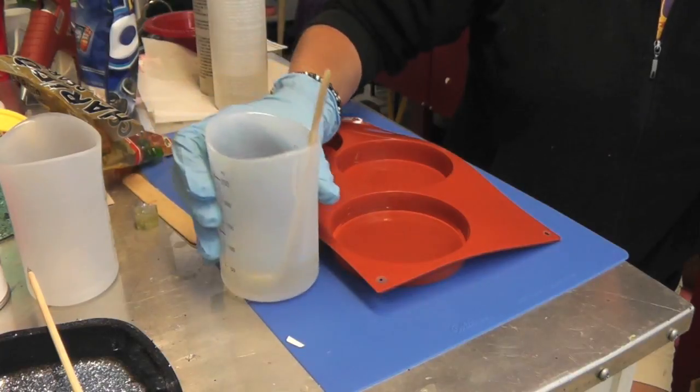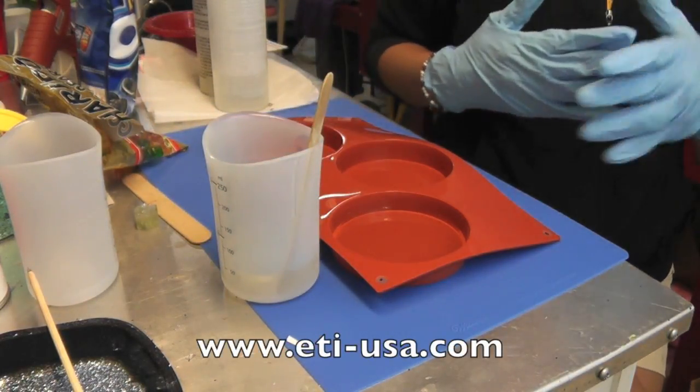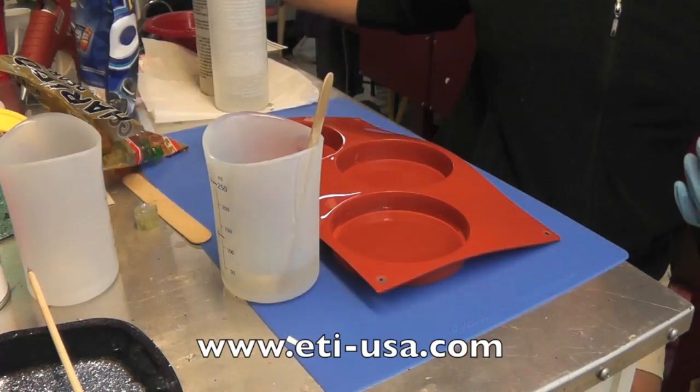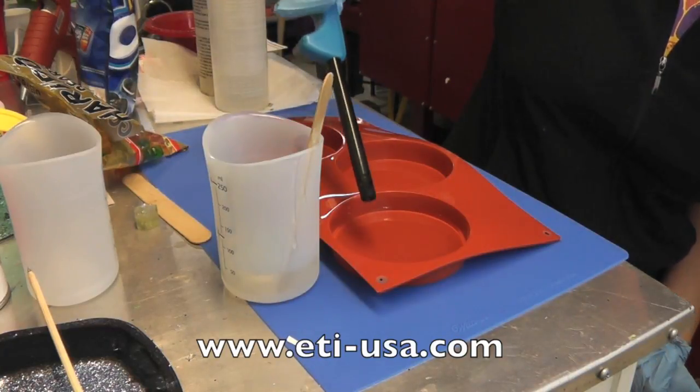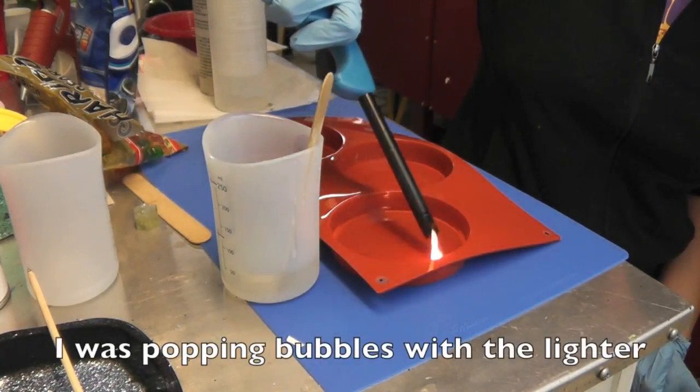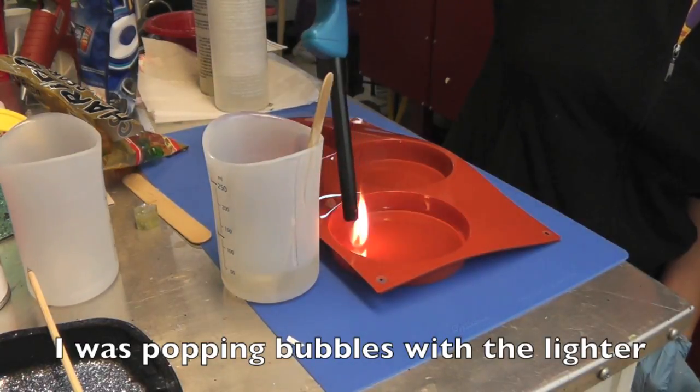And if you are having any trouble finding the EasyCast, go online to their website at www.eti-usa.com, otherwise you can find it at Michael's, Hobby Lobby, all the usual places.